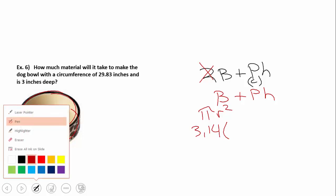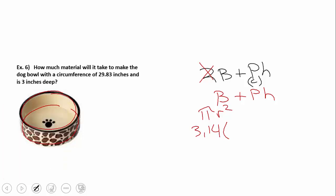I notice that it says the circumference is 29.83. I know that circumference, if I want to find the radius, is 2πr. So I go 2 times 3.14 times my radius is equal to 29.83.